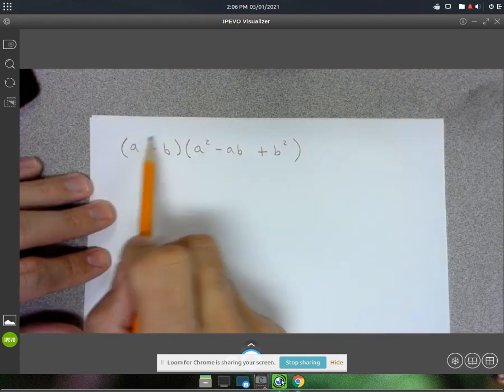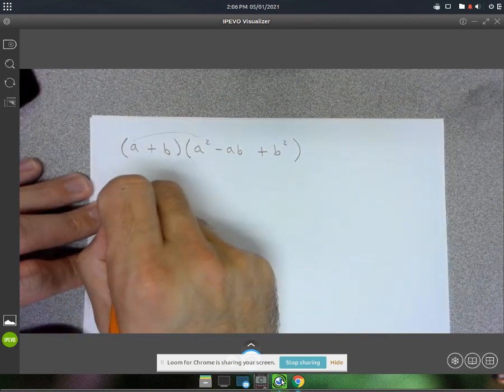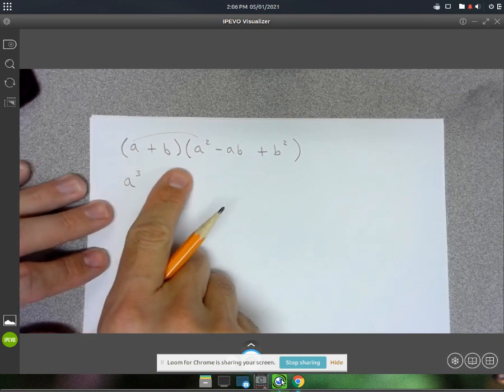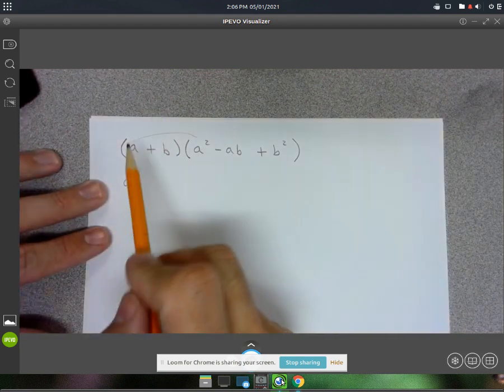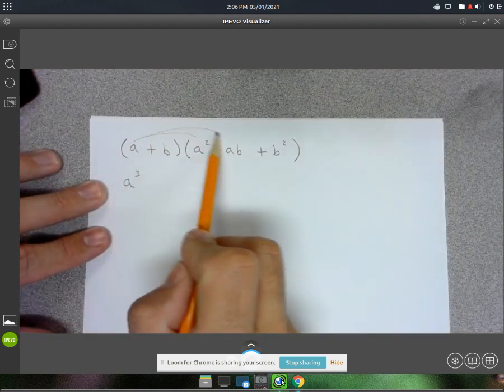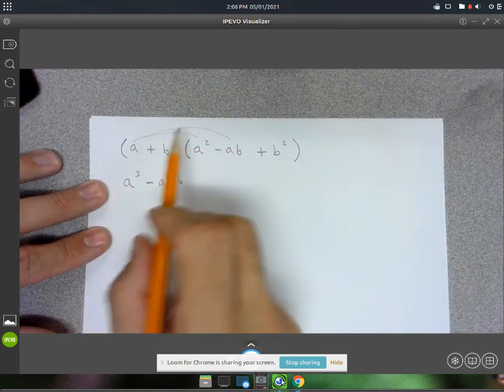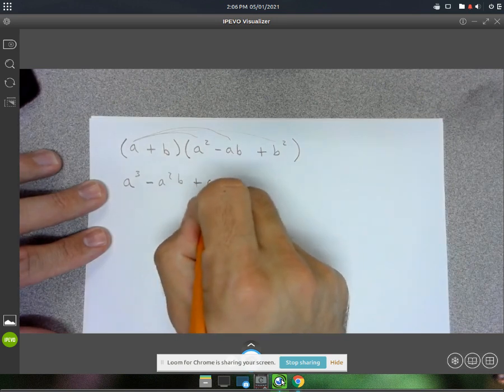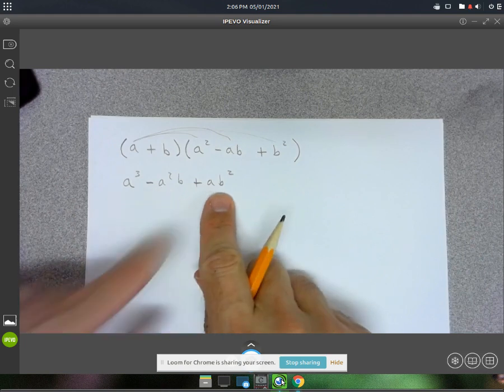I'm going to distribute here. a times a² gives me a³. This isn't what you'll be doing every time - I'm deriving the formula, showing you where it comes from. Then a times -ab gives negative a²b. And a times b² gives positive ab². These are not like terms; the exponents are different.